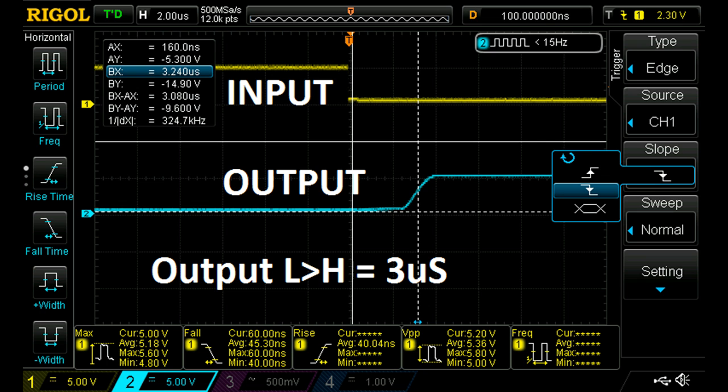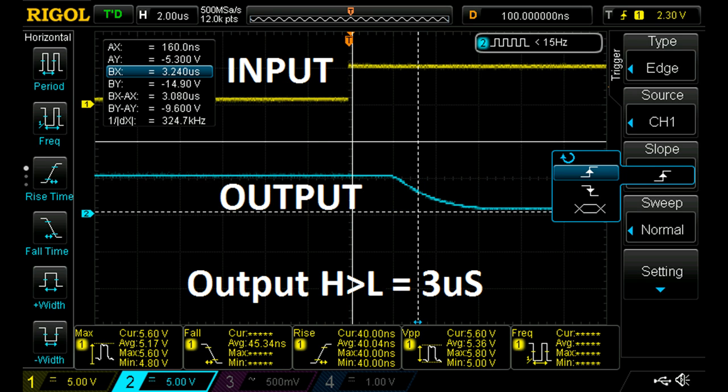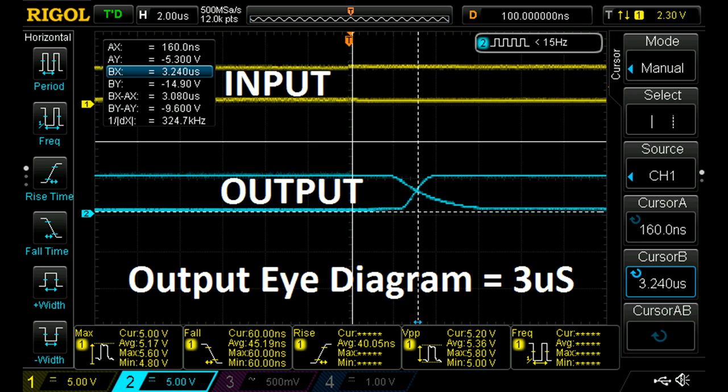The result shows a low to high time of three microseconds and a high to low time of three microseconds as well. The eye diagram shows the symmetry. The fall time is longer and the rise time is quicker but it's uniform delay, very much similar, much better for communication purposes.